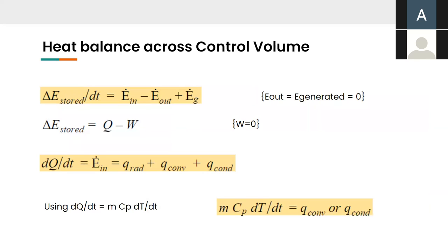Thank you, Arin. Now we'll move forward to looking at the heat balance across the control volume of our model. So, as you know, the change of energy stored with time can be taken to be the energy coming inside our system minus the energy going outside plus the energy generated. As we know, this system of ours isn't generating any energy from inside, nor is any energy going out. So, the final equation turns out to be dQ by dt is energy inside, which is in the form of three heat transfer modes. That is radiation, convection and conduction. We neglected work again because there is no work done by the system. So, we end up with an equation which is MCP dt by dt equals to Q-convection or Q-conduction depending on which is applicable where.